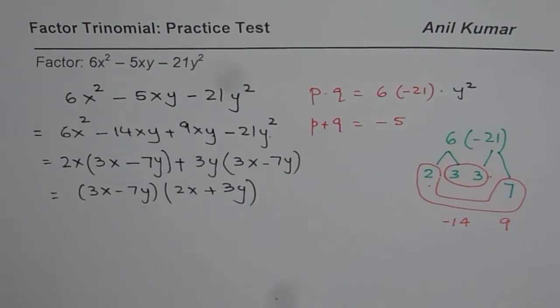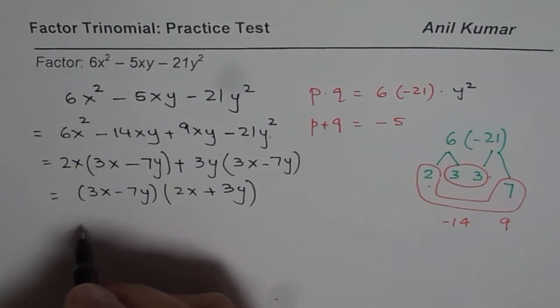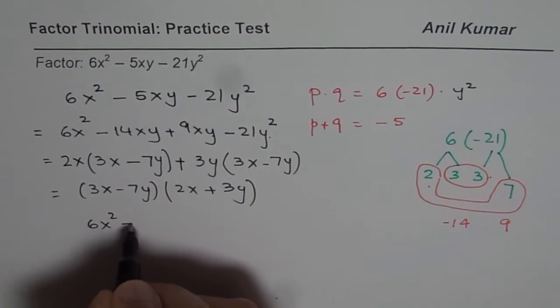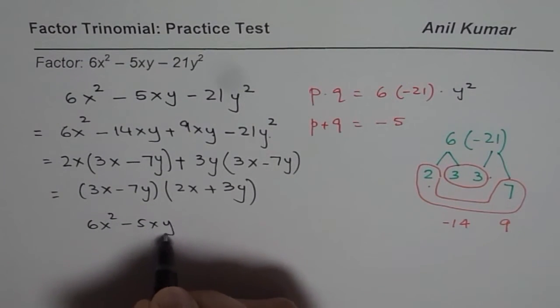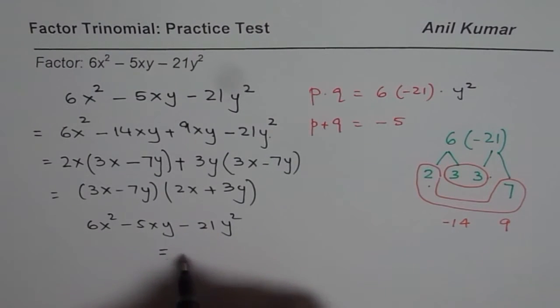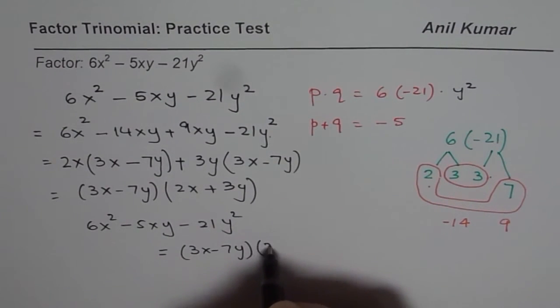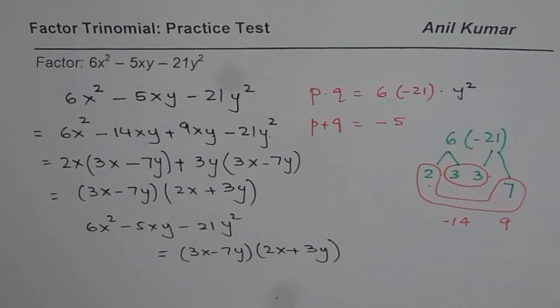So that is how we can factor a trinomial which has slightly bigger numbers. So we could write this as 6x² - 5xy - 21y² equals (3x - 7y) times (2x + 3y) as our answer. I hope that helps. Thank you and all the best.